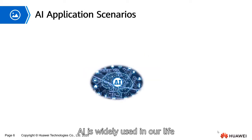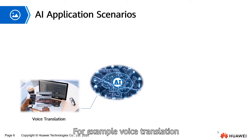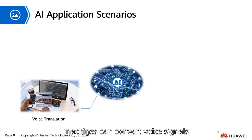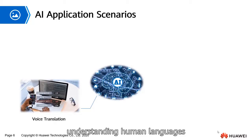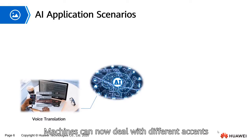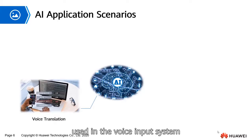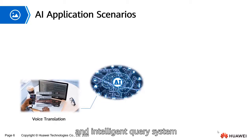AI is widely used in our life. For example, voice translation — through natural language processing including feature extraction, pattern matching criteria, and model training — machines can convert voice signals into texts or commands, understanding human languages by sentences and their meanings. Machines can now deal with different accents, slang, background noises, and different persons' tones. Voice translation is commonly used in voice input systems, voice control systems, and intelligent query systems.